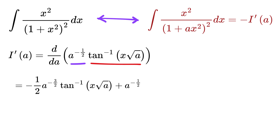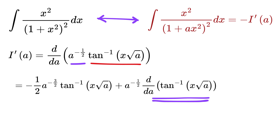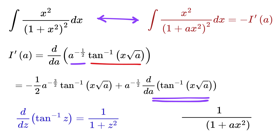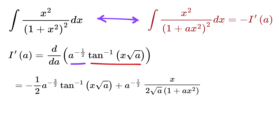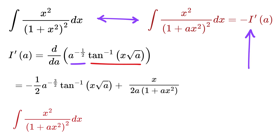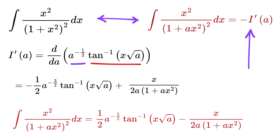For the second part of the product rule, we keep a raised to minus half as it is and differentiate the second term. To differentiate tan inverse of x root a, we use the chain rule. The derivative of tan inverse of something is 1 over 1 plus that something squared, so we get 1 over 1 plus x squared times a, and then we multiply by the derivative of the inside part, which is x root a. The derivative of x root a with respect to a is x times 1 by 2 root a. So the full derivative becomes this. We can simplify both terms to get 1 over 2 times a. But this integral is minus I prime of a, which will be this.